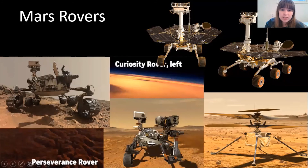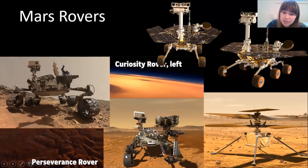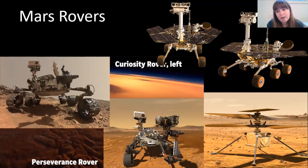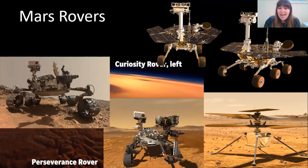Rovers like Spirit, Opportunity, and Curiosity have helped us figure out that there is a tiny bit of ice water on Mars and that maybe there used to be entire oceans. That's why we sent the rover Perseverance — launched just this year — whose main mission is to find signs of ancient life on Mars. If Mars used to have oceans and be a warmer planet, maybe it could have had life on it, and scientists think that billions of years ago there might have been aliens living on Mars.